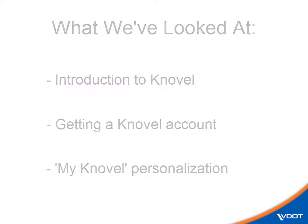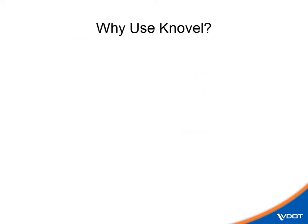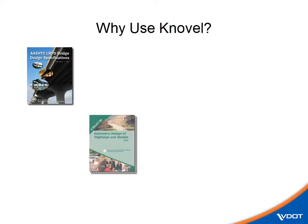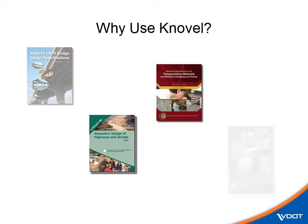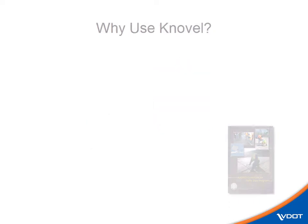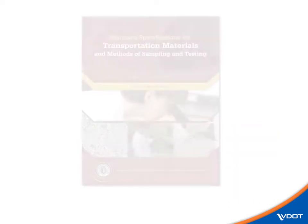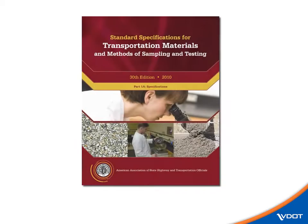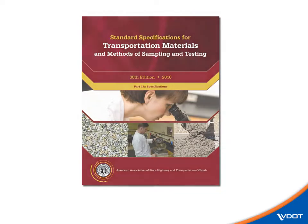Engineers use Novel for fast access to the right technical information, and at VDOT, that means core technical publications from AASHTO. Novel provides full-text, desktop delivery of AASHTO titles like the LRFD Bridge Design Specifications or the AASHTO Green Book. Probably one of the most important and most consulted reference books at any State DOT is AASHTO's standard specifications for transportation materials and methods of sampling and testing. This tutorial provides tips for finding and using AASHTO specifications through Novel.